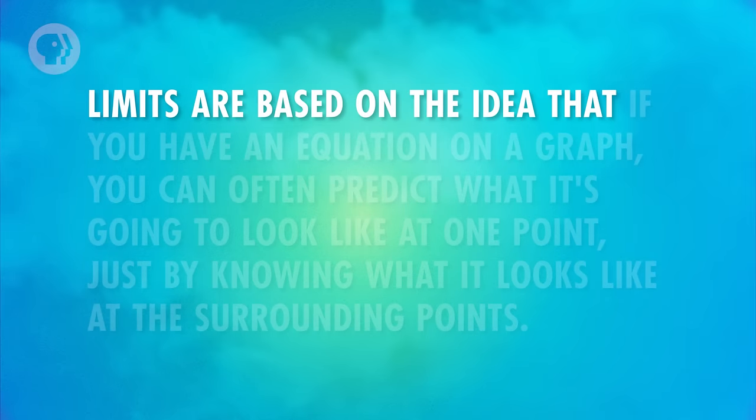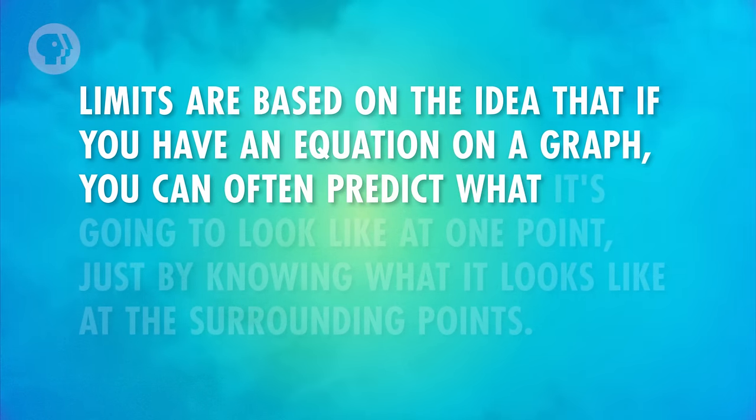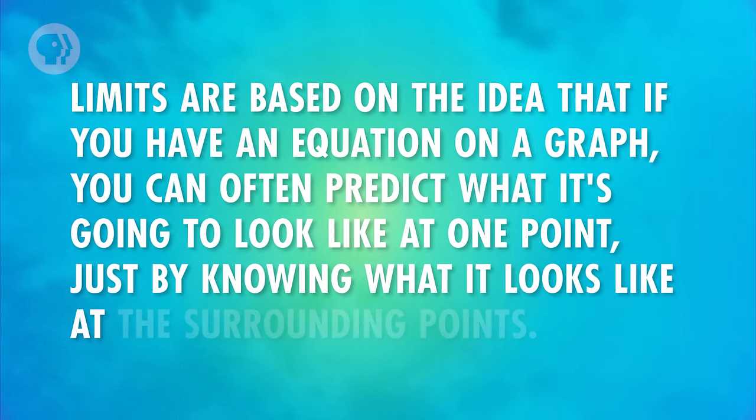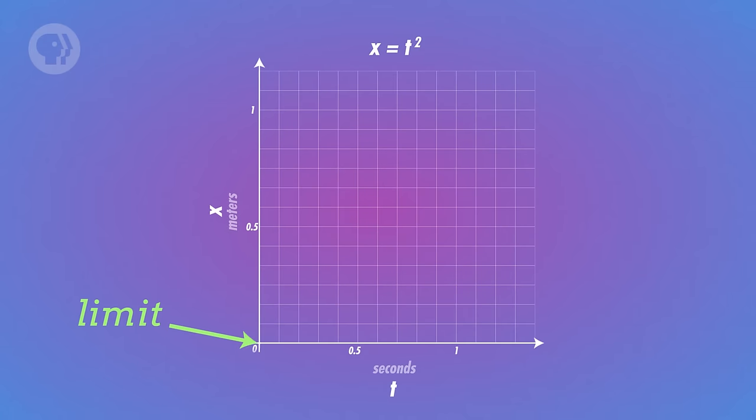I'll explain. Limits are based on the idea that if you have an equation on a graph, you can often predict what it's going to look like at one point, just by knowing what it looks like at the surrounding points. For example, let's say you have a graph of x equals t squared from our speeding scenario, and you want to find out how your position is changing at the exact moment that time is equal to zero. That is what we call the limit as t approaches zero. At t equals 1, x is 1. At t equals 0.5, x is 0.25. And at t equals 0.1, x is 0.01. You can probably tell that as we get closer and closer to t equals 0, your value of x is getting closer to zero. That's what mathematicians mean when they talk about a limit.